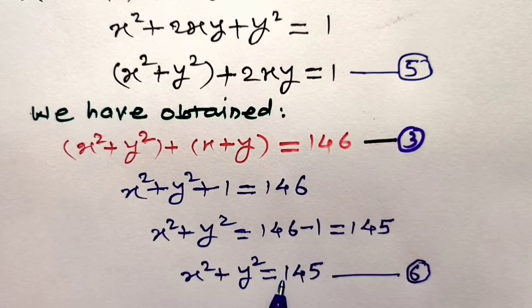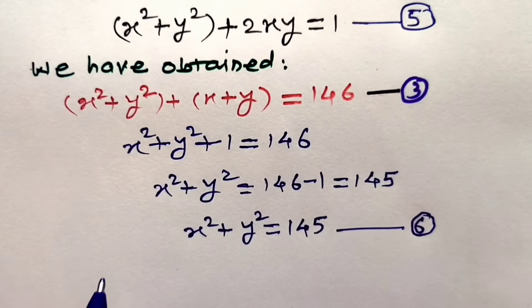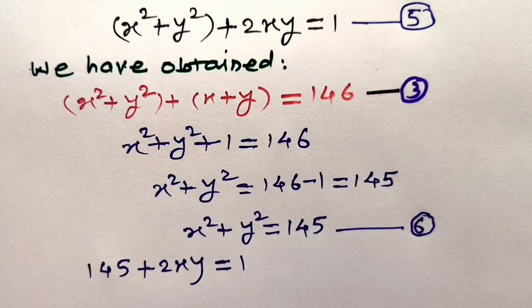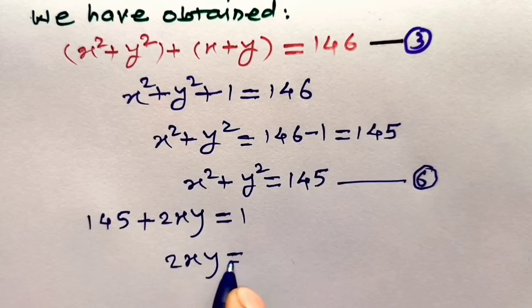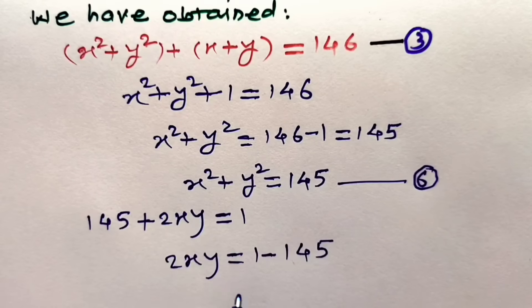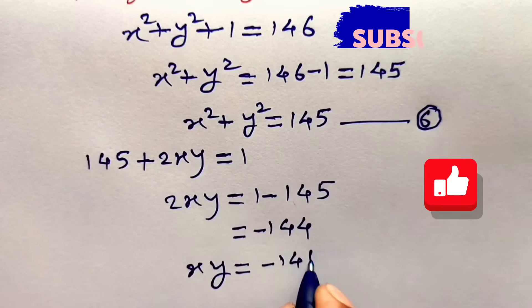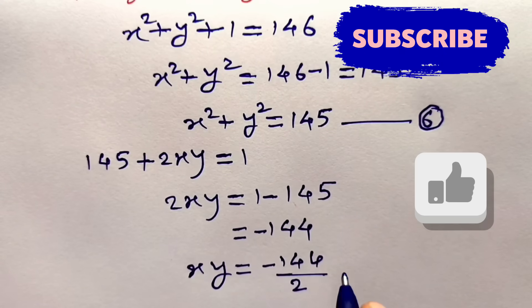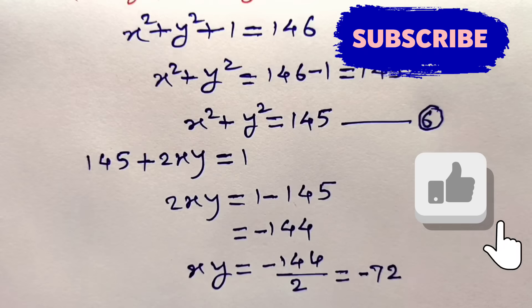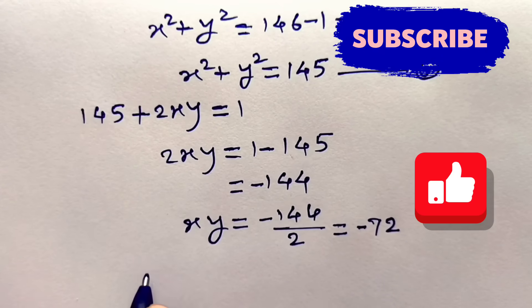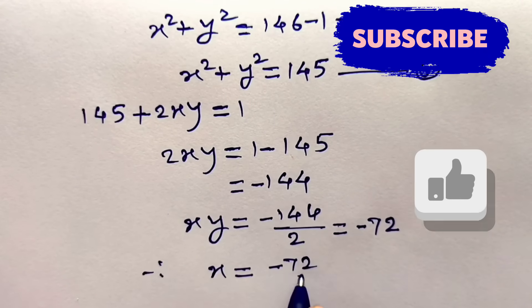Now we substitute equation 6 into equation 5. Equation 5 becomes: 145 plus 2xy equals 1. Taking 145 to the right hand side: 2xy equals 1 minus 145, so 2xy equals minus 144. Hence xy equals minus 144 divided by 2, which equals minus 72. Let us find x in terms of y: transferring y to the right hand side, x equals minus 72 upon y.